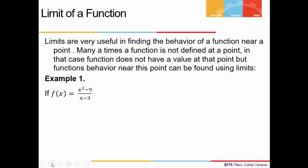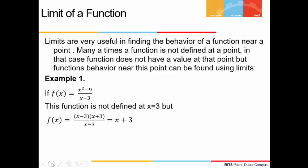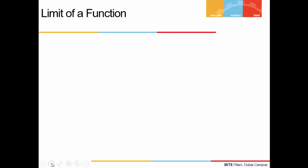If f(x) is (x² - 9) / (x - 3), we can see the function is not defined at x = 3. But if we write the numerator x² - 9 as two factors (x - 3)(x + 3) and divide by (x - 3), we get (x + 3). At x = 3, the value of the function is 6.